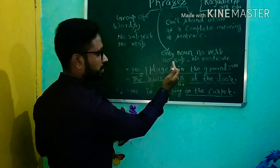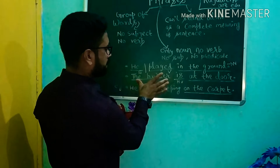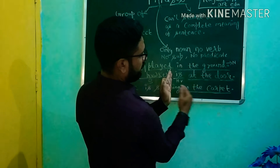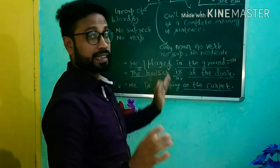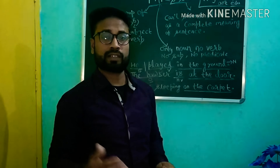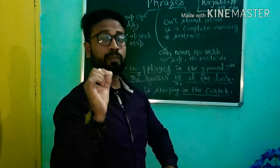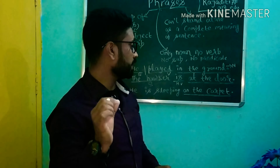'The hawker is at the door.' Here, 'the hawker' is the subject, 'is' is the helping verb, and 'at the door' will be the predicate for this sentence — as discussed in the previous video about what predicate and subject are.